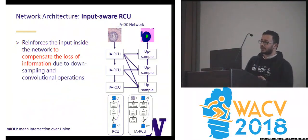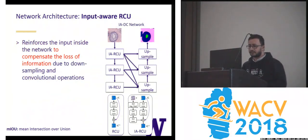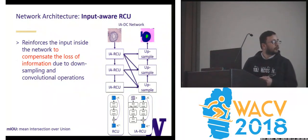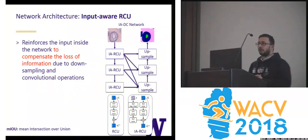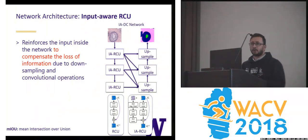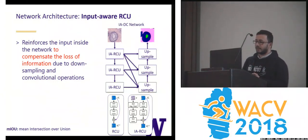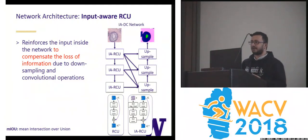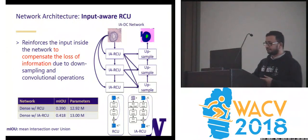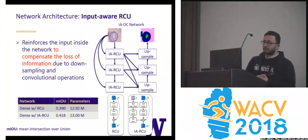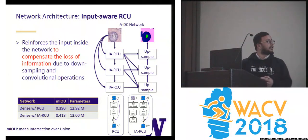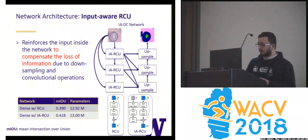Our second contribution is input-aware residual convolutional units. Most of you must be familiar with residual convolutional units. The problem with these is that due to the downsampling and convolutional operations, you lose spatial information. So we basically reinforce the input inside the network to compensate for this loss of information. When we reinforce the input inside the network, the accuracy of our network improved by 3%, which is significant.